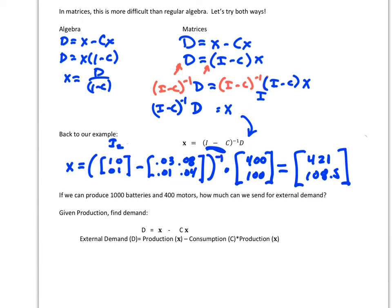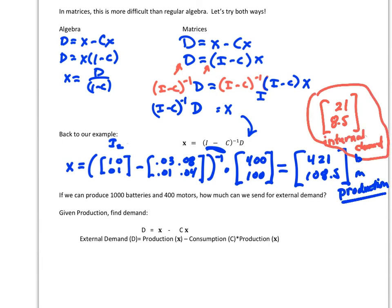So now let's check a few things. First of all, did we end up with producing more than what our external demand was? Sure, this is 400, 100. Yep, I'm a little bit more than that. Then the other question would be, how much is going inside? So if you want to look at efficiencies and everything else, I'm going to have 21 batteries that stay inside and 8.5 motors that stay inside. So that would be my internal demand.